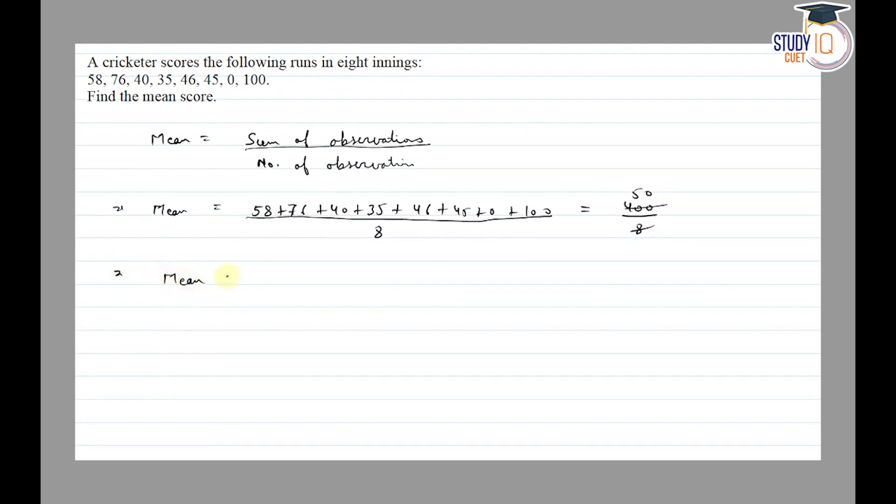Finally, mean is equal to 50. So the mean score is 50 runs. Thank you.